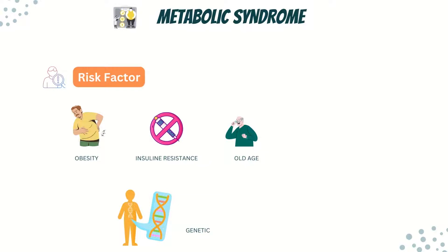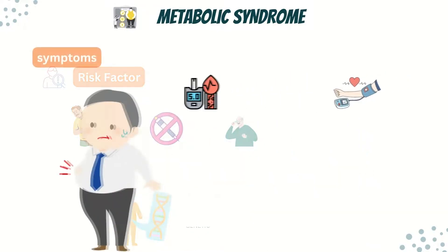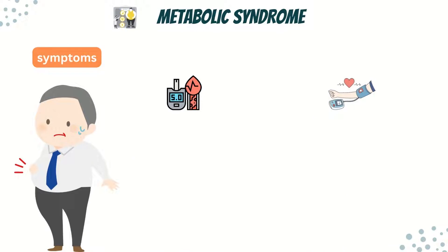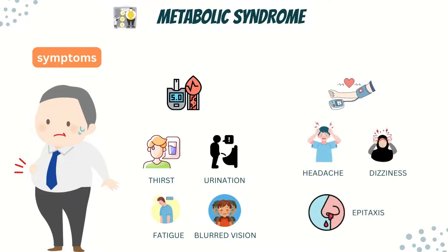Other than a large waistline, you may not notice any symptoms, but eventually you may develop diabetes or high blood pressure. With diabetes, symptoms can include excessive thirst or urination, fatigue, and blurred vision. With high blood pressure, symptoms can include headaches, dizzy spells, and nosebleeds.